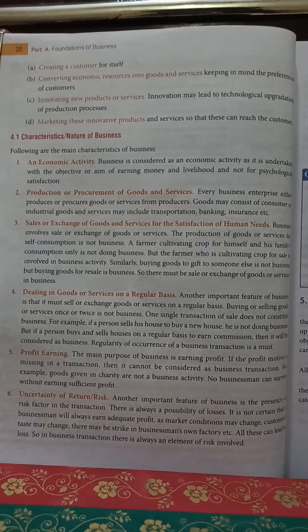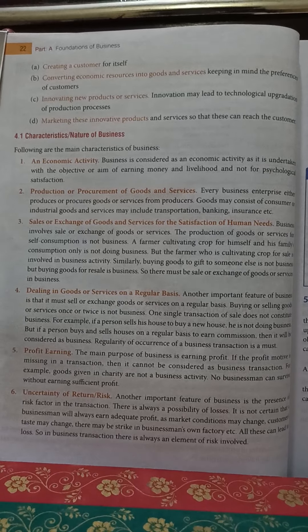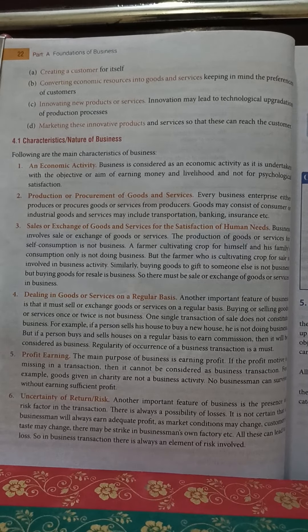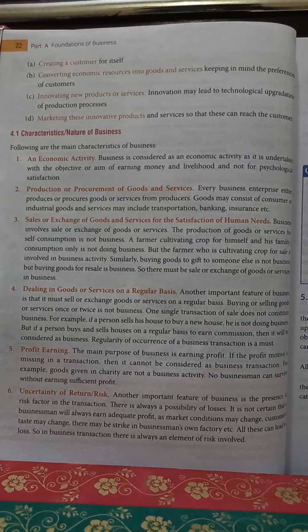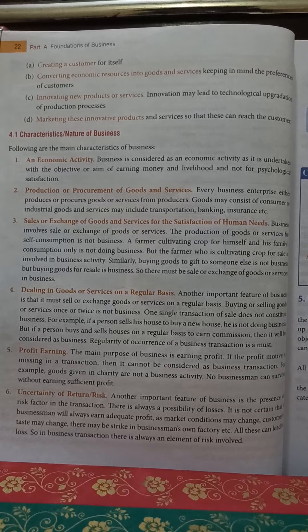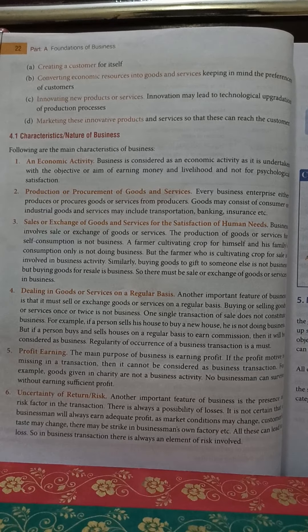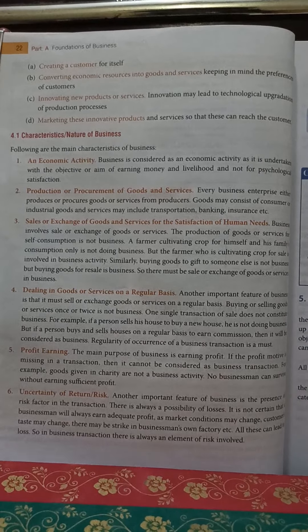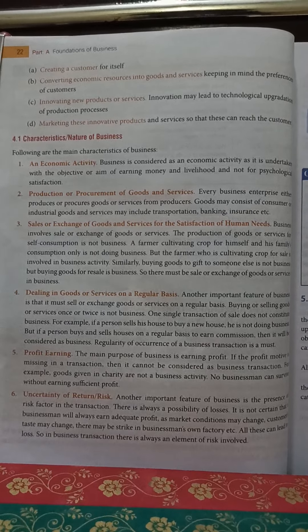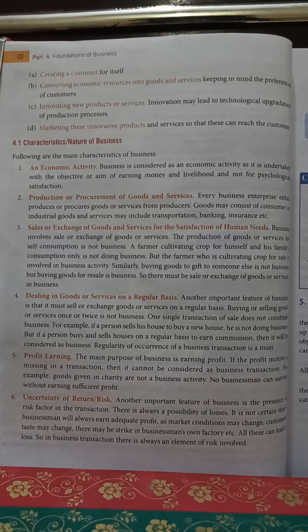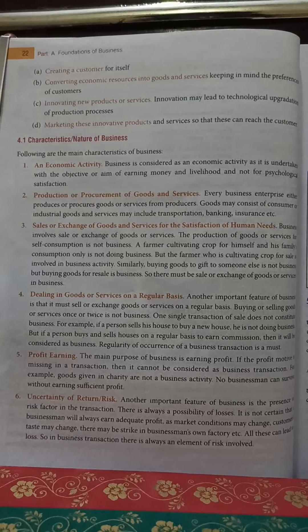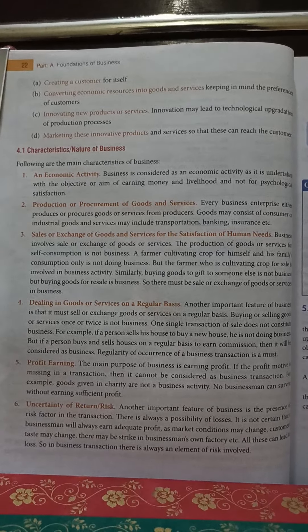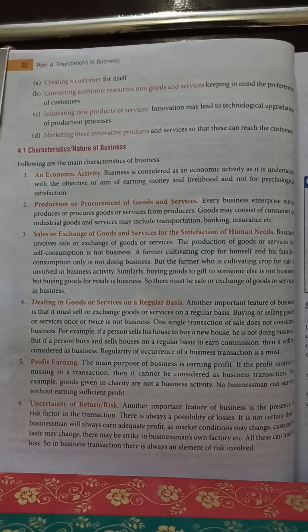The fifth point is profit earning. This is the very important objective of doing business — whenever we are doing business, our motive should always be to earn profit so that we can sustain our operations. It may happen that sometimes we incur losses, but even then our main motive behind business is always to earn profit. If we are performing a particular work with the motive of doing charity, then that will not be considered as a business — it is treated as charity. Like during the pandemic situation in India, many people distributing essential items to poor people have the motive of charity, not profit.